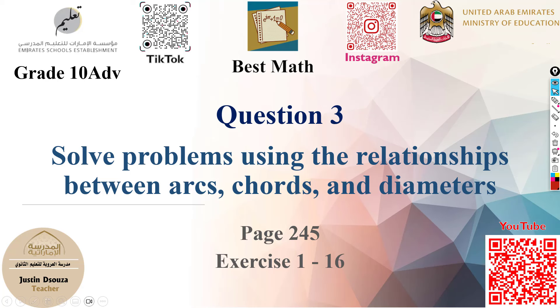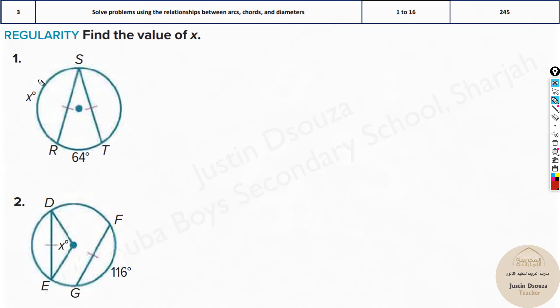Question 3 is to use the relationship between parts of the circle and solve the problems. Here we have been told to solve for the x value. How do we start? There is only x and 64, and we have no idea about the other side. But they have told this chord and this chord are equal.